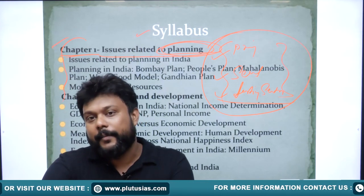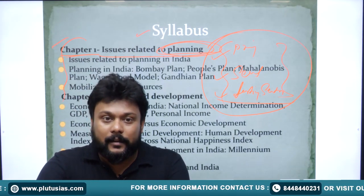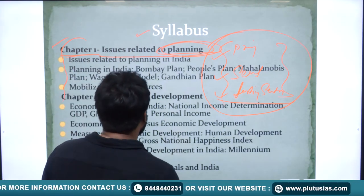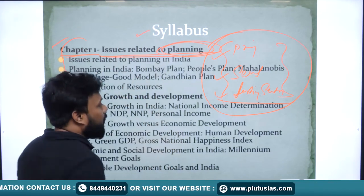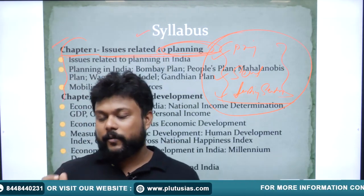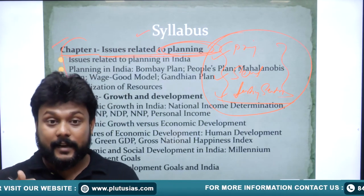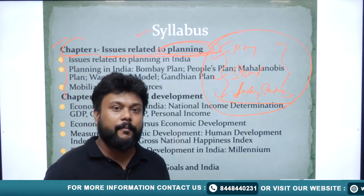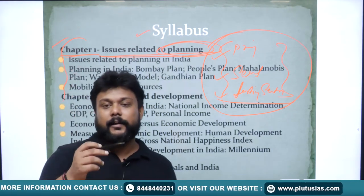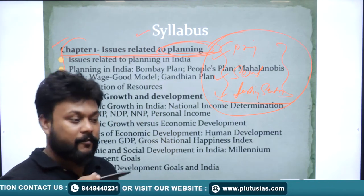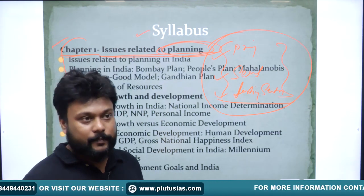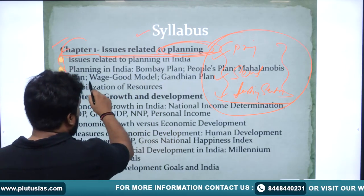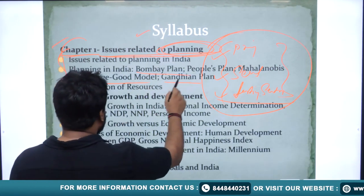The era of planning started by forming the Planning Commission in India. We will discuss what planning exactly means, the different types of planning, how planning leads to development, and the Five-Year Plans — what each plan's goals were, whether they failed or not — evaluating the planning era up to 1991, including different models of planning.